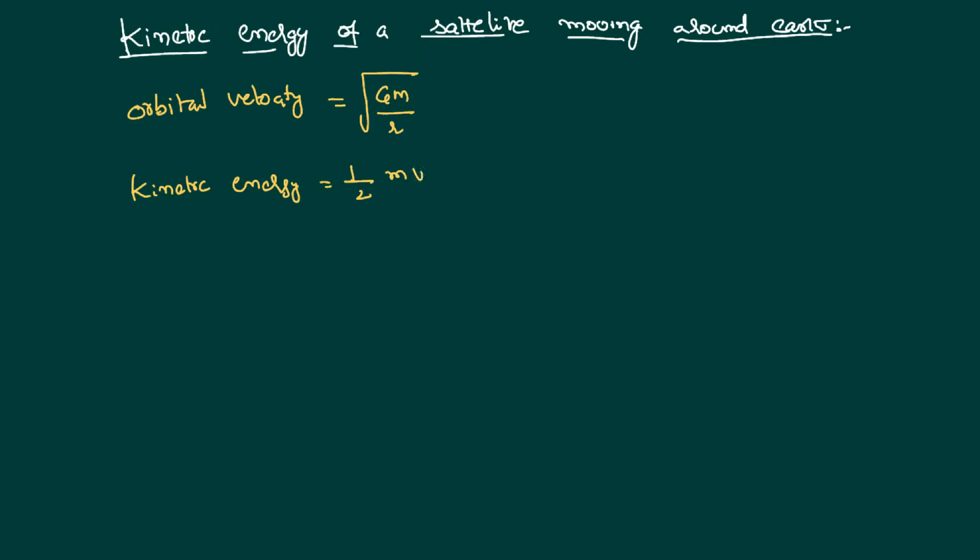in mechanics, is simply half mv squared. Half mv squared will become gm by r, so its value is gmm by 2r. That's the simple equation for the kinetic energy of a satellite.